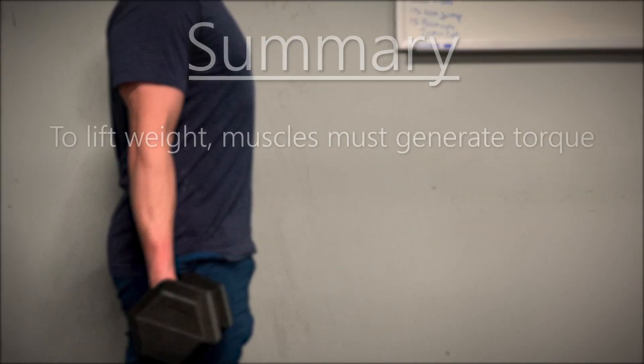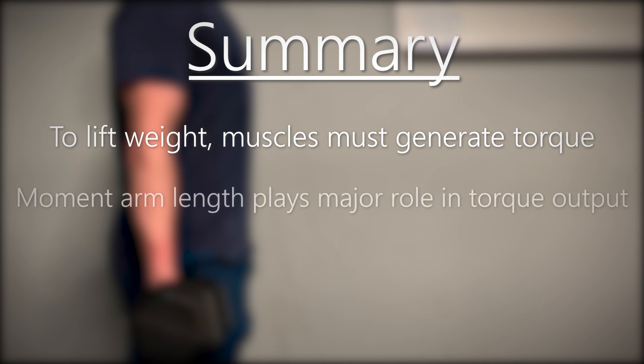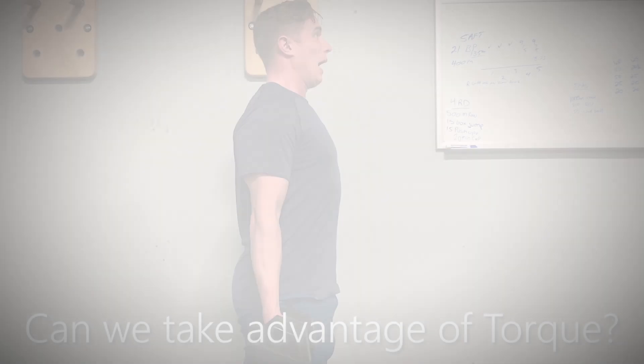To sum things up: your body needs to generate torque to lift weights, the distance of the moment arm plays a major role in determining how much torque is required during the range of motion, and the longer the moment arm, the more torque required to complete the lift.